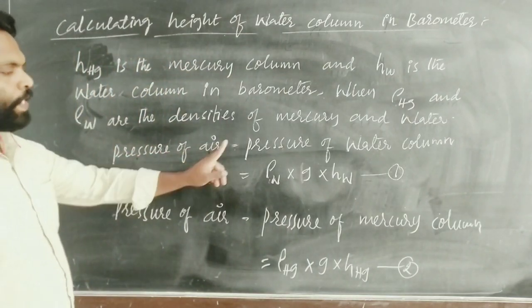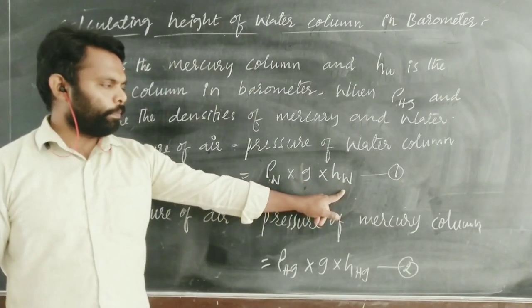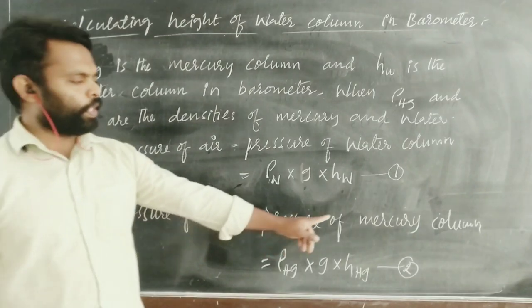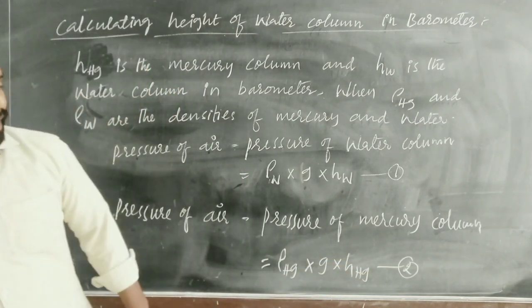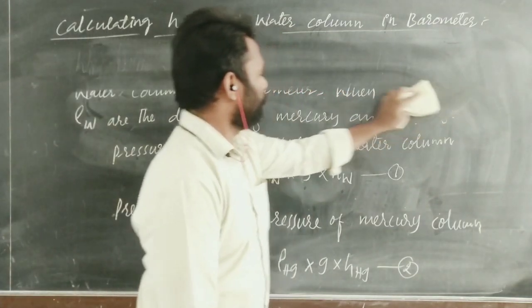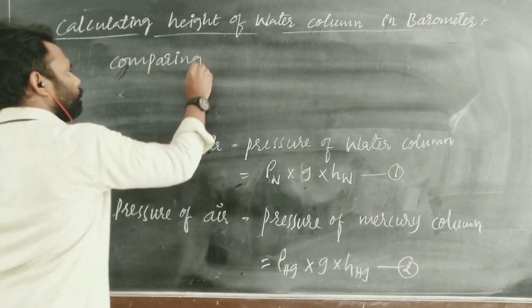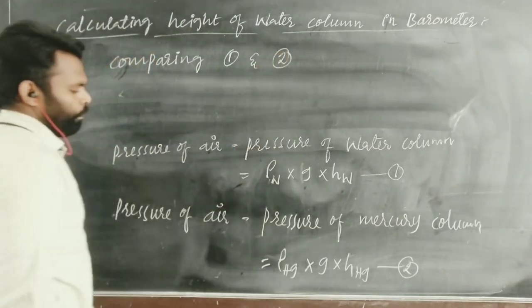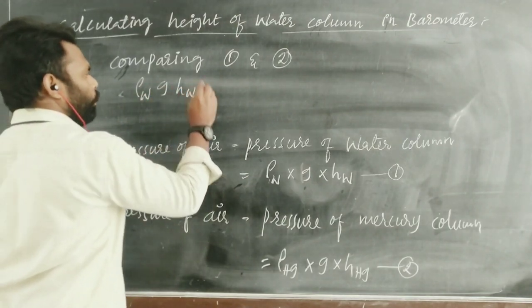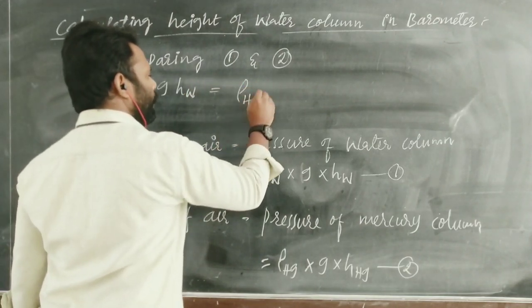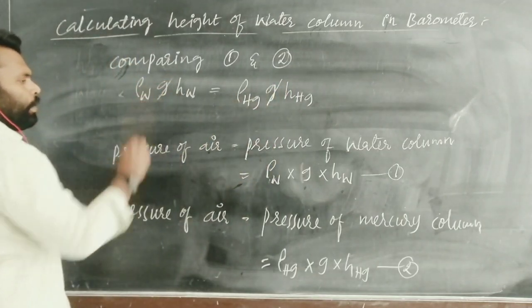Here, pressure of air equals density of water into acceleration due to gravity into height of water column. And pressure of air also equals density of mercury into acceleration due to gravity into height of mercury column. Comparing expression 1 and expression 2, we can write: rho_w × g × H_w = rho_Hg × g × H_Hg. Acceleration due to gravity cancels out from both sides.